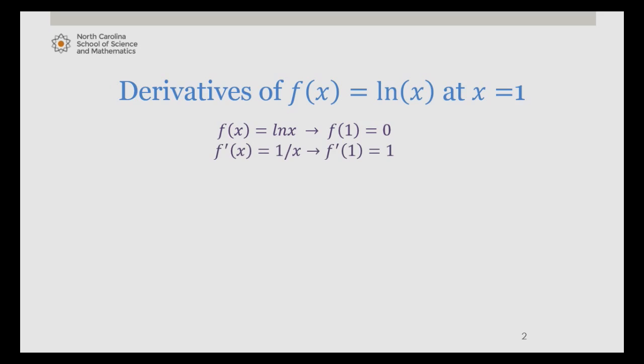The first derivative is 1 over x, evaluated at 1 gives us 1. The second derivative is negative 1 over x squared, evaluated at 1 is negative 1.